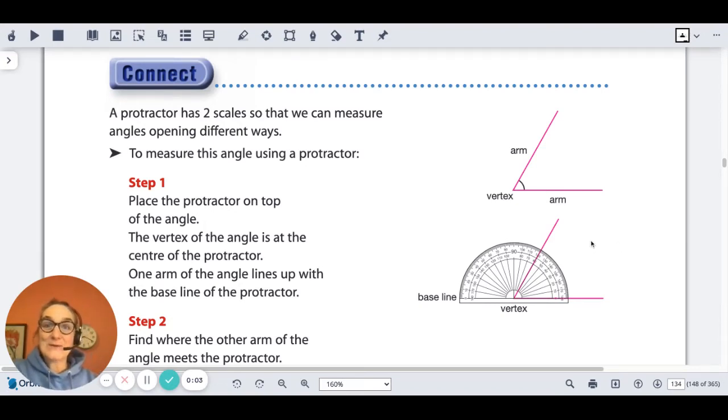Page 134 in your textbook gives a really good review of how to use a protractor. If you have any trouble remembering what to do or measuring angles, you can go back to pages 134 and 135 and review it. I measured a couple of angles with you on the page that I had printed out.